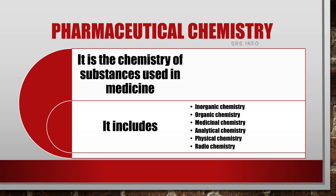So what do you understand by the term chemistry? Chemistry is the branch of science which deals with the composition, quality and other characteristics of matter. Like that, Pharmaceutical Chemistry deals with the characteristics, the composition, the quality, etc. of those substances which are used in medicines — the chemistry related to medicine.